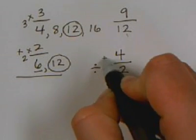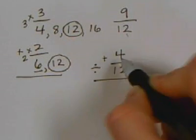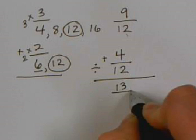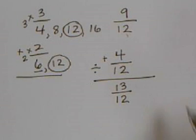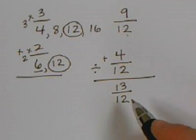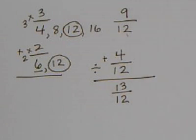Then they add them up like usual. 9 plus 4 is 13/12. And then they will need to simplify this answer and change the improper into a mixed fraction. Let's do another one together.